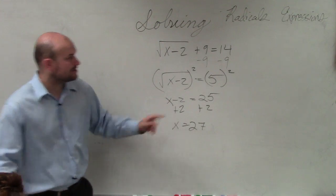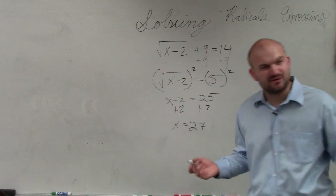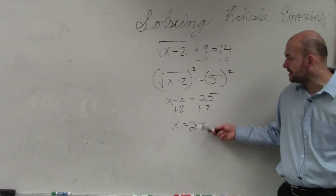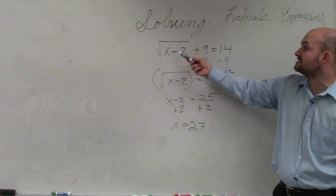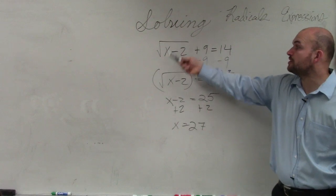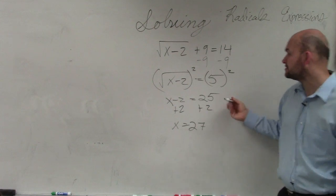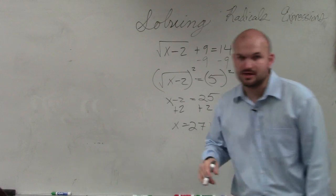Then again, ladies and gentlemen, I want to make sure I plug this back in. However, this one's fairly simple. I'm going to do this in my head. If I plug 27 in for x, 27 minus 2 is 25, square root of 25 is 5, plus 9 is 14. So that checks out.